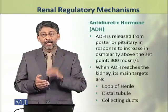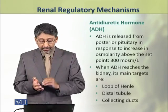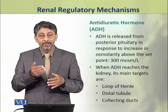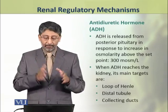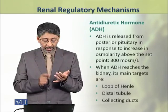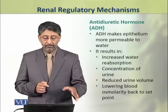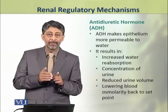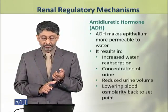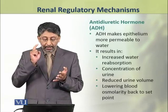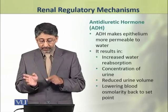The anti-diuretic hormone is released from the posterior pituitary in response to an increase in osmolarity above the set point, which is about 300 milliosmol per litre. When anti-diuretic hormone reaches the kidney, its main targets are the loop of Henle, distal tubule, and collecting ducts. It makes the epithelium more permeable to water, resulting in increased water reabsorption, concentration of urine, reduced urine volume, and lowering of blood osmolarity back to the set point.